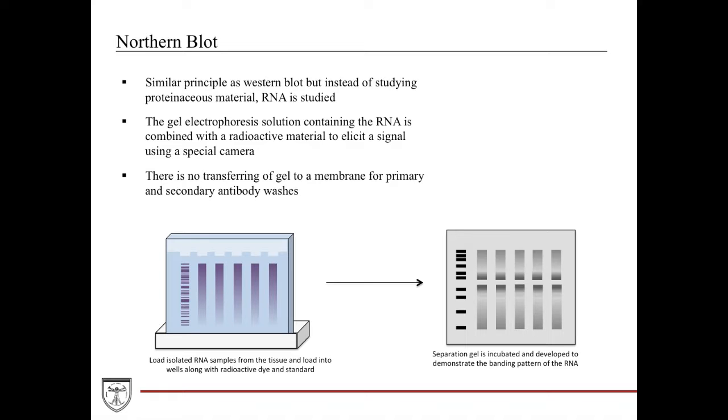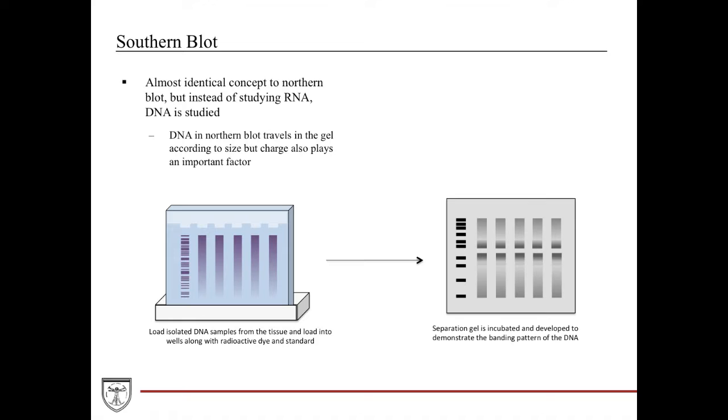All you have to remember is that Northern blot is specific for RNA. Western blot is specific for proteinaceous material. And the last one, Southern blot, is specific for DNA. It's pretty much almost exactly similar to what happens with the Northern blot. It just runs in the exact same fashion except now you're just studying for DNA.